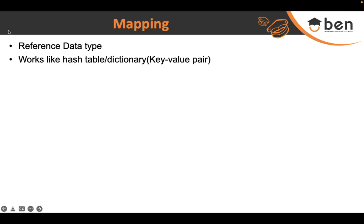There are a lot of information related to a single course, and there can be multiple courses where this information varies from course to course. You want to save this information on your contract in a meaningful manner so that retrieving it is not difficult. In databases it's easy — you create tables and save data in rows — but in smart contracts you have the mapping data type.